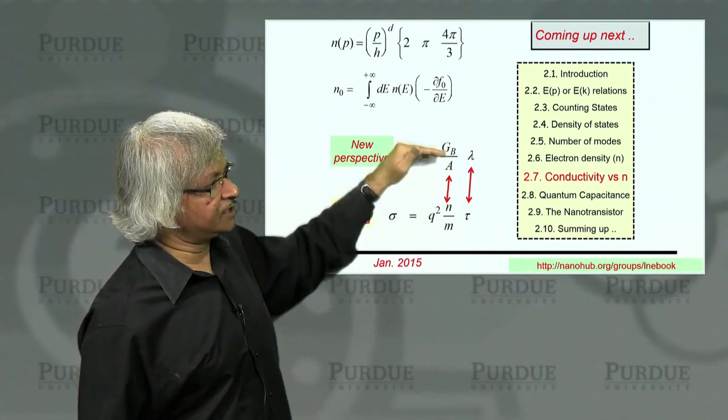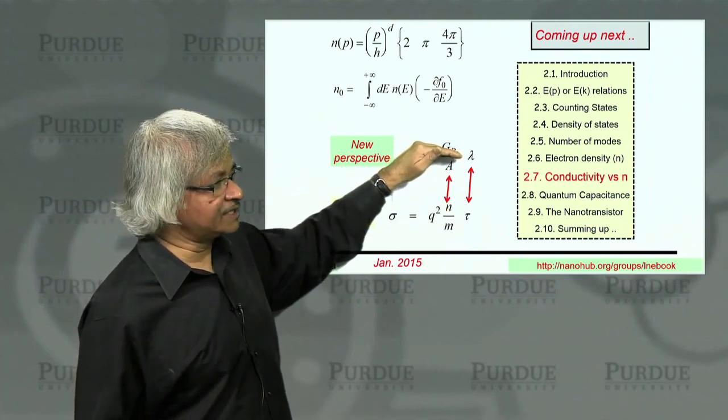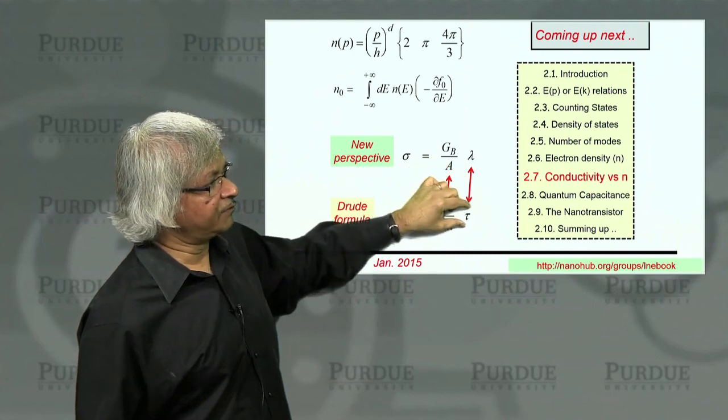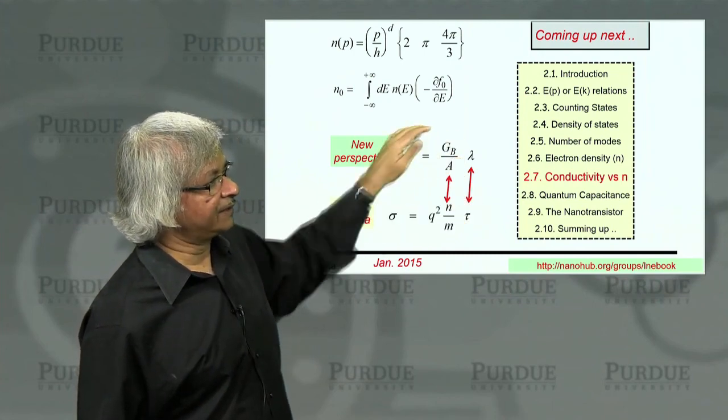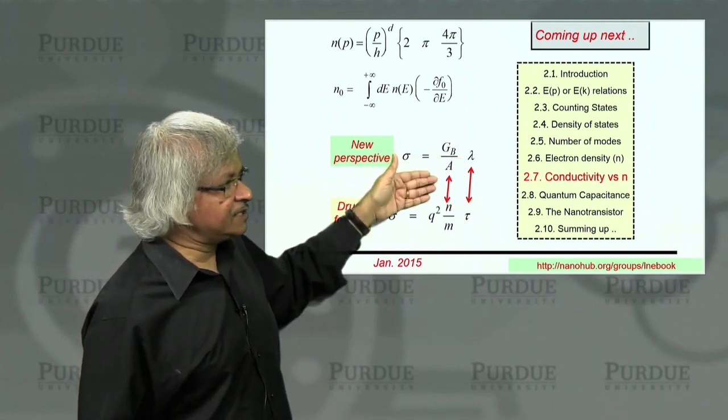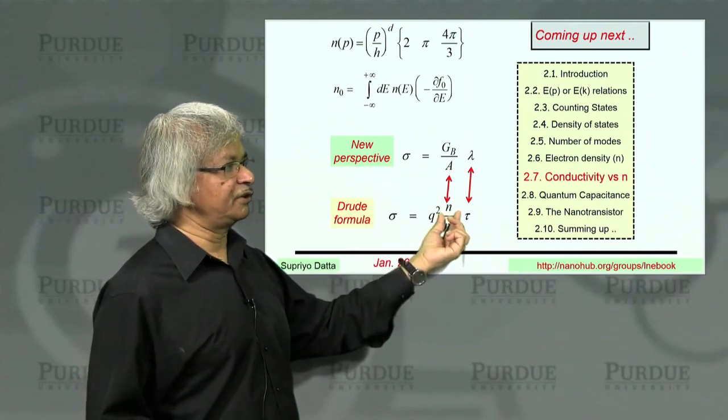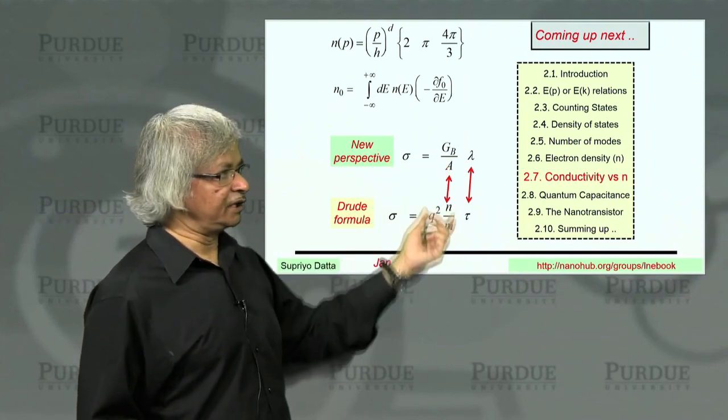And as I discussed, there is this correspondence. The role of electron density is played by the ballistic conductance, and then you have the mean free time and the mean free path. And in order to connect these, we needed an expression for electron density so that we can compare.